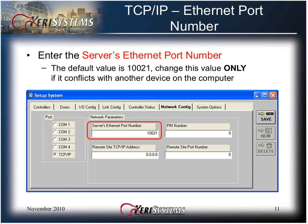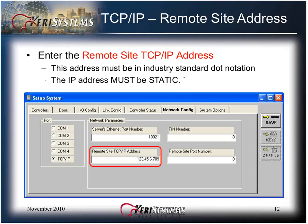Enter the server's Ethernet port number. The default value of 10021 should be changed only if it conflicts with another device on the computer. Enter the remote site TCP/IP address. The address must be in industry-standard dot notation and the IP address must be static. The static IP address must be obtained from the IT administrator. Cary Systems will not help set network configuration parameters — only an IT administrator is authorized to configure his or her network.